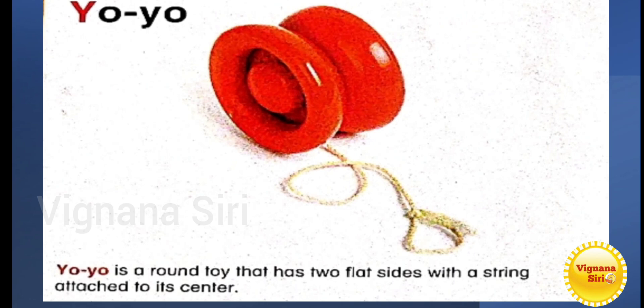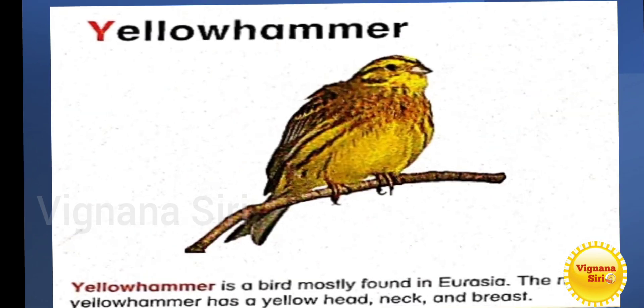Y for yoyo. Yoyo is a toy. You can find it in toy shops. It has a string. So yoyo is a round toy that has two flat sides with a string attached to its center. Y for yellowhammer. Yellowhammer is a bird mostly found in Eurasia. The male yellowhammer has a yellow head, neck and breast.